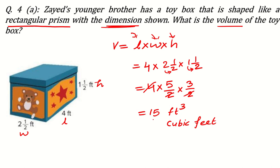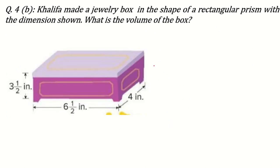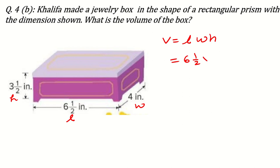Next question: Khalifa made a jewelry box in the shape of a rectangular prism with the dimensions shown. What is the volume of the box? Volume is equal to L × W × H — sometimes written as L × B × H, it doesn't make a difference. Length is 6 and a half, width is 4, height is 3 and a half.